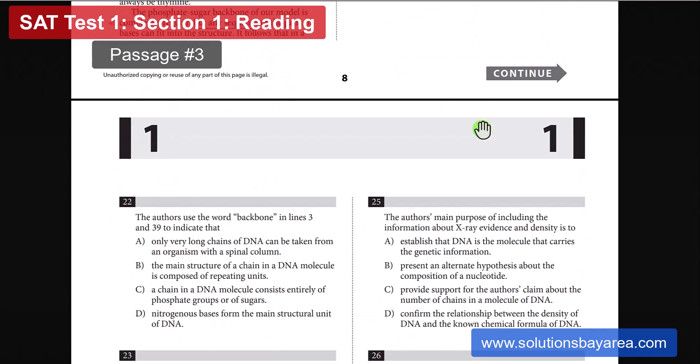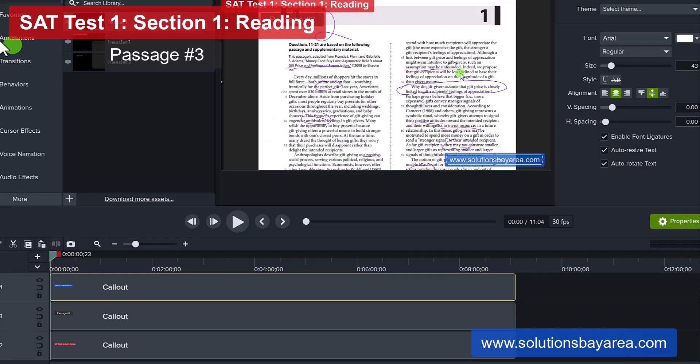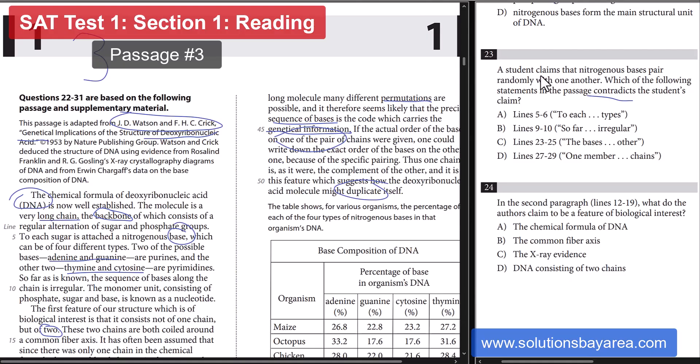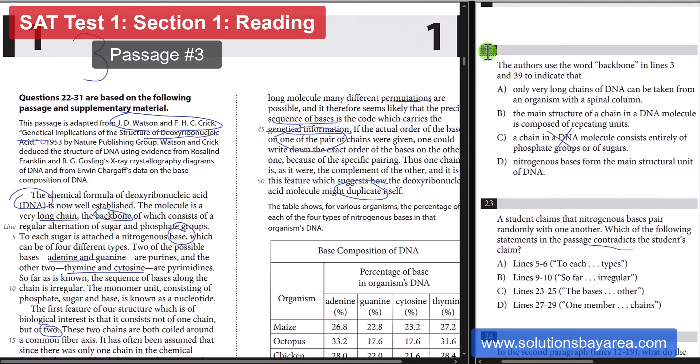So let's move on to the questions then. If you find this tutorial and walkthrough to be helpful, be sure to like and subscribe. Also, you can check out my website at www.SolutionsBayArea.com. We're going to go to the questions here. Question number 22: The authors use the word backbone, lines 3 and 39, to indicate what?